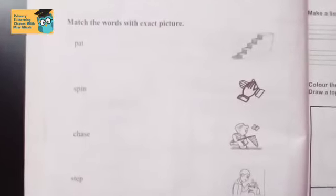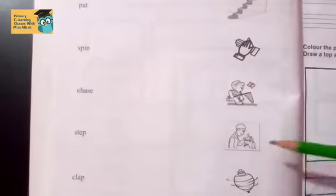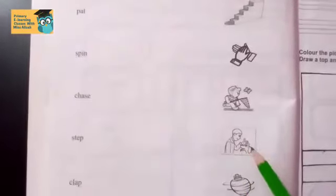Take another example, the first word: pat. Pat means to tap lightly. When we do good things, when we get good grades, our mom and dad pat us. Now you have to look here. Is there a picture showing someone patting? Yes, we have this picture, a boy and a dog. This boy is patting. So what does that mean? We have to match these two.